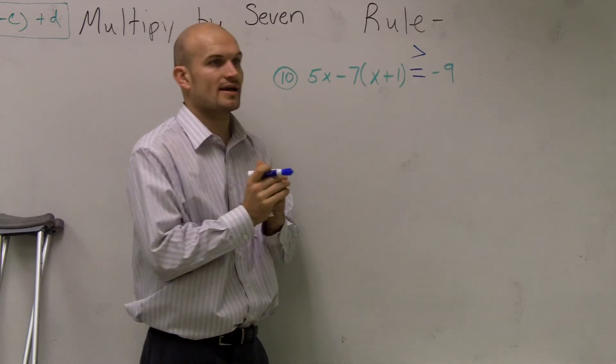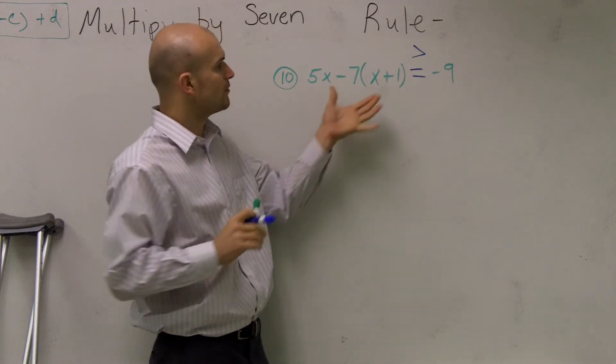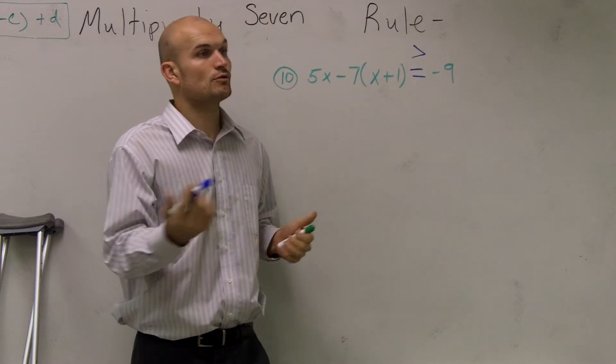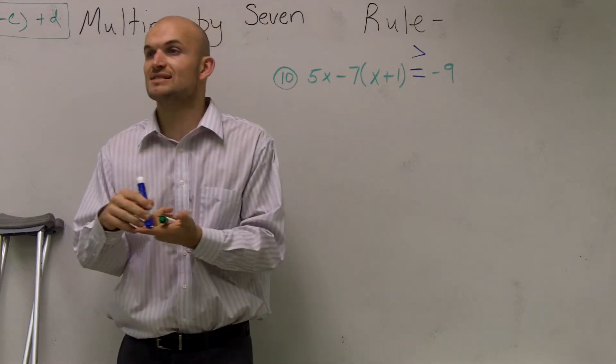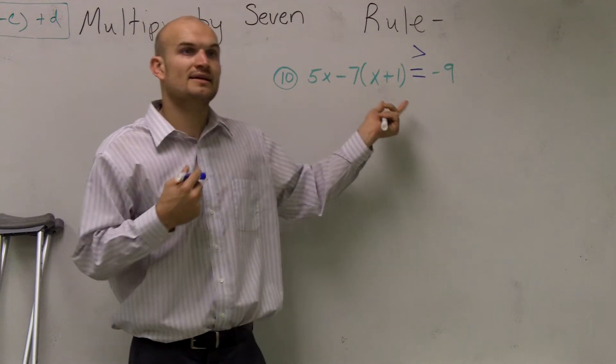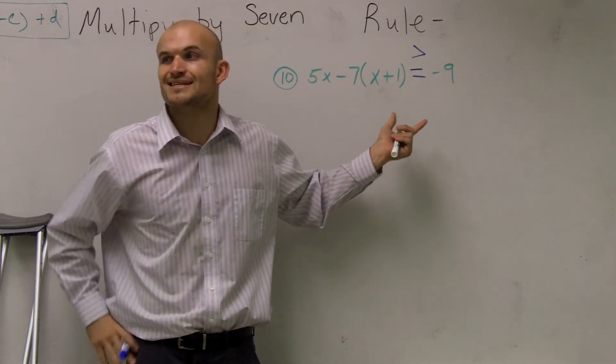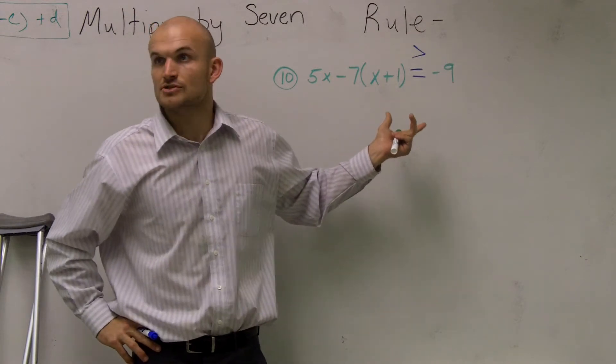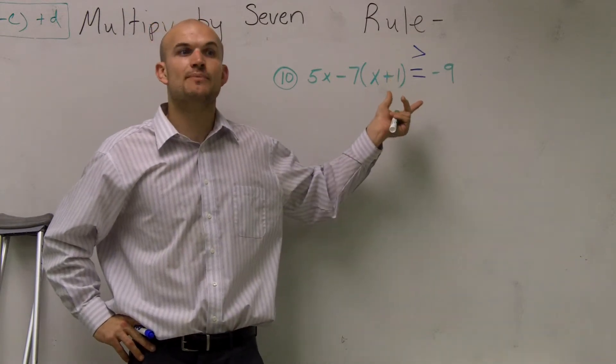So the first thing I look at guys, and remember when we have an equation like this, we want to follow the rules of PEMDOTS. So remember the rules of PEMDOTS say, do what's inside parentheses first. So I see parentheses. Can I do anything inside parentheses? Well, inside this parentheses says x plus 1. I cannot combine x plus 1. So therefore, there's nothing I can do inside parentheses.